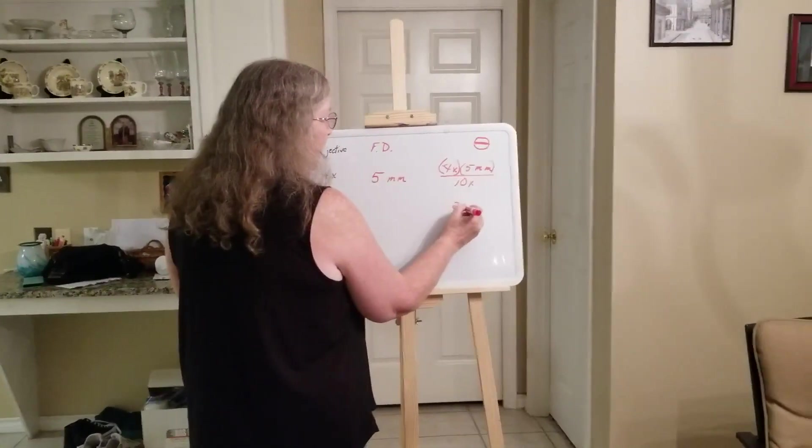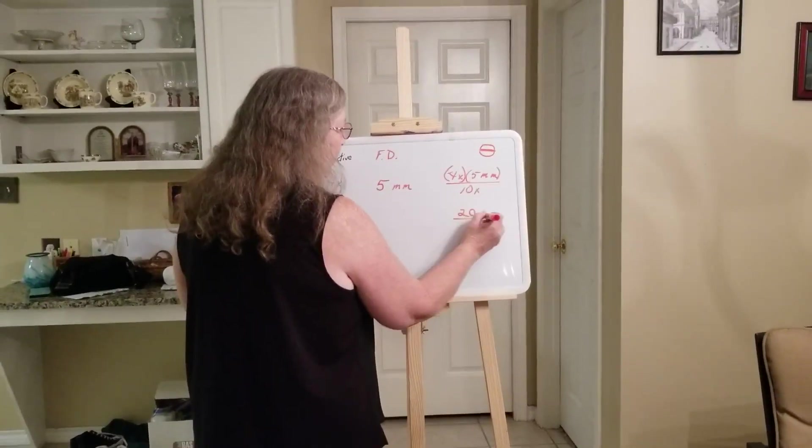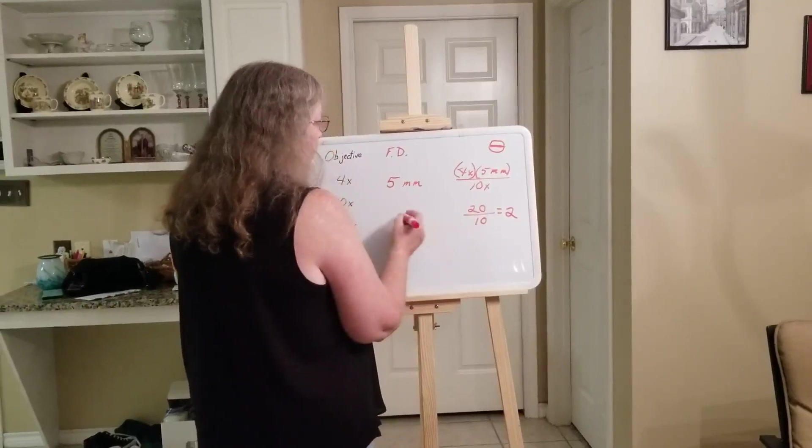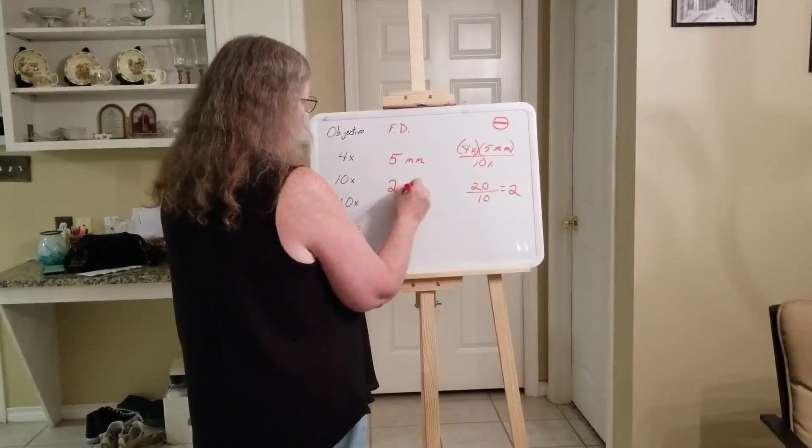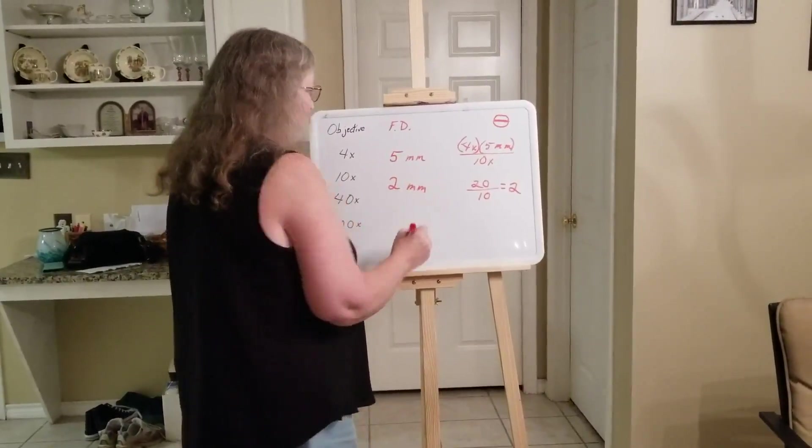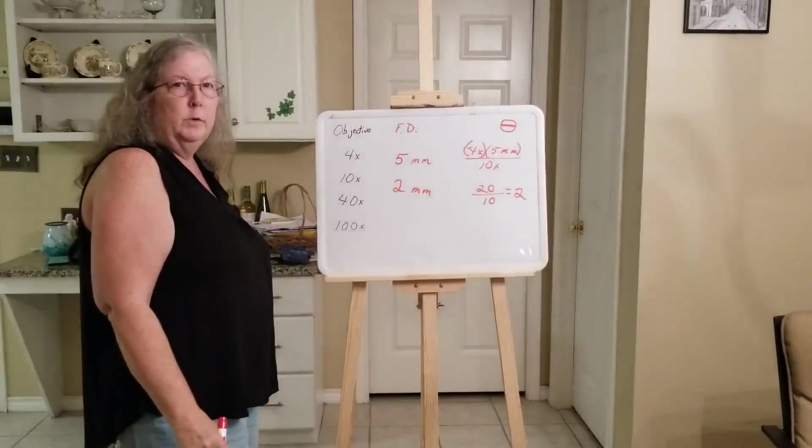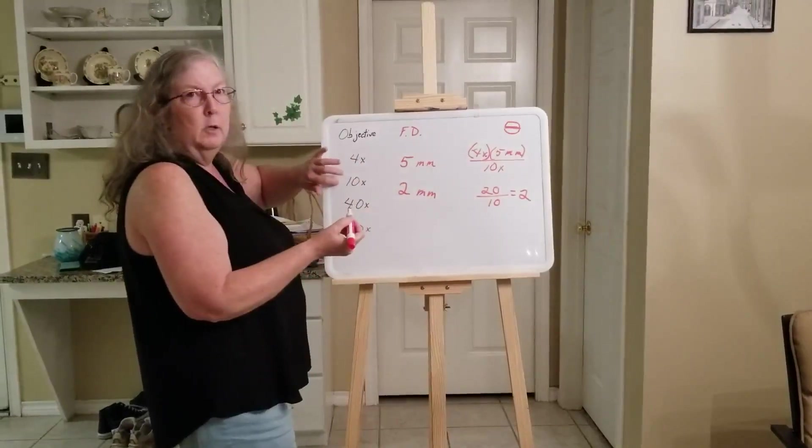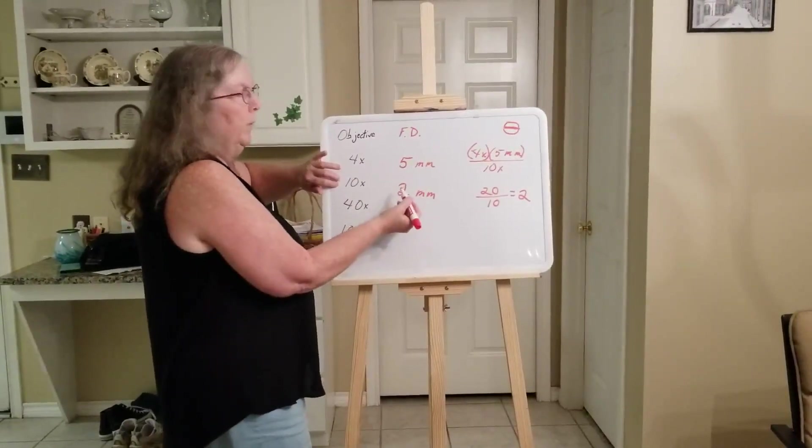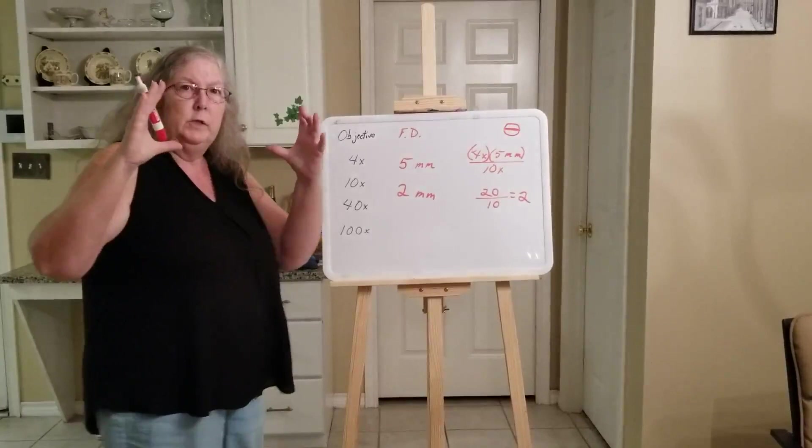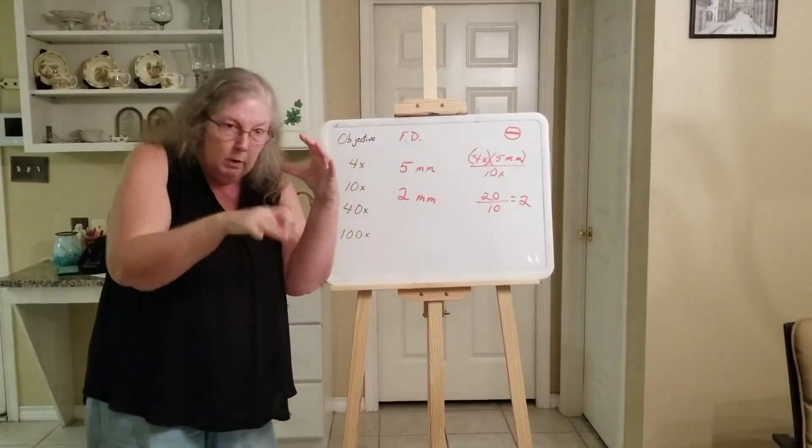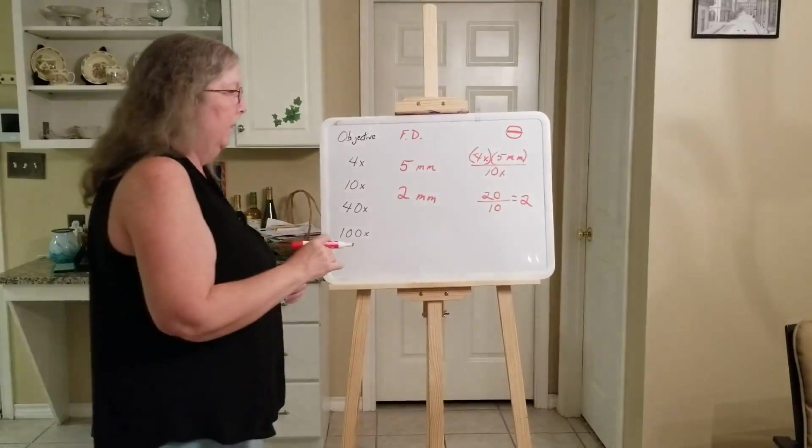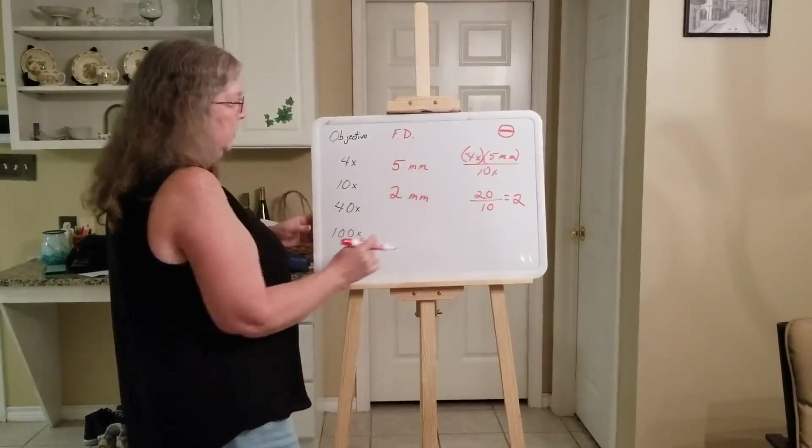So this equation, 4 times 5 is 20, divided by 10, which is going to be 2. 2 millimeters. So you see that distance, as we increase the magnification, the field diameter is going to decrease. We're just saying that area of view that we're looking through the microscope, it's getting smaller and smaller.